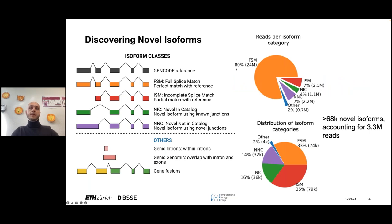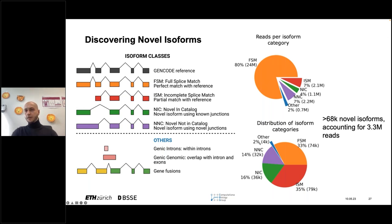In our data, 24 million reads — 80% of our data — are full-splice match, meaning known isoforms, which is reassuring. Around 11% of reads belonged to novel isoforms, about 3 million reads. But if you take only one read per isoform, you have a distribution of 33% full-splice match and about 30% novel isoforms — meaning a third of all isoforms found are actually novel isoforms. Out of more than 200,000 isoforms we found, 60,000 were novel isoforms, accounting for 3.3 million reads.